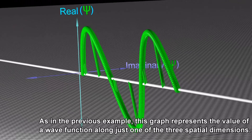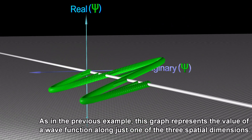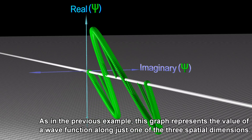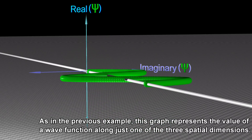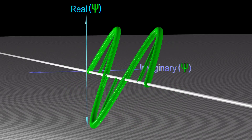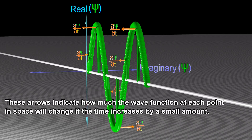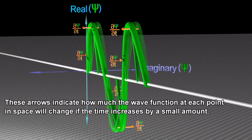This graph represents the value of a wave function along just one of the three spatial dimensions. These arrows indicate how much the wave function at each point in space will change if the time increases by a small amount.